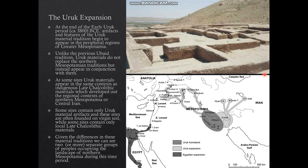By the end of the early Uruk period, by about 3800 BCE, we see artifacts and features of Uruk material tradition begin to show up outside of the southern alluvium. On the map here, you can see the Uruk heartland. The first area we see that expansion is into southwestern Iran, into the Susiana and De Loran plains, which becomes relatively quickly incorporated into the Uruk world sphere. Eventually it makes its way up the Euphrates and Tigris river systems, and we start to see a different type of interaction.